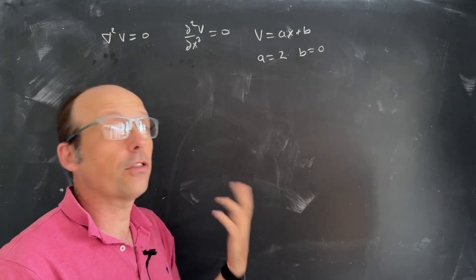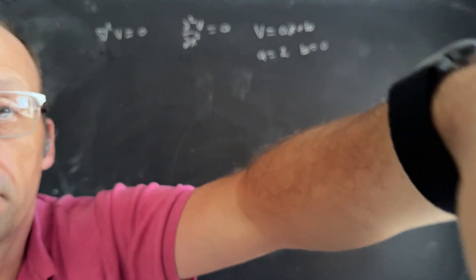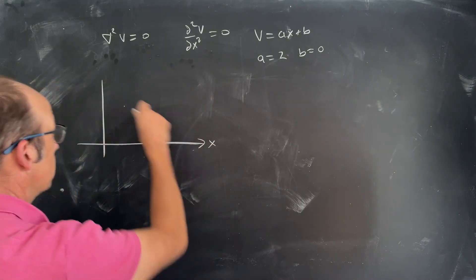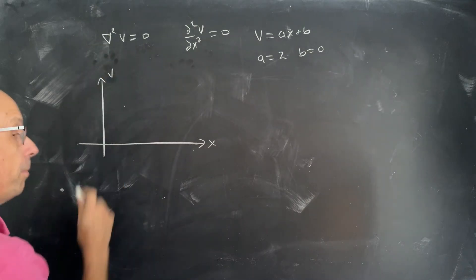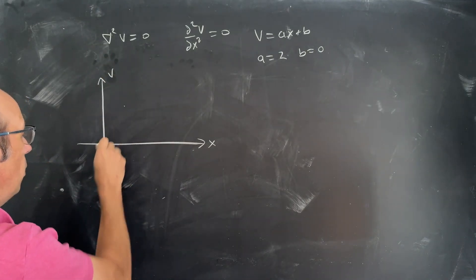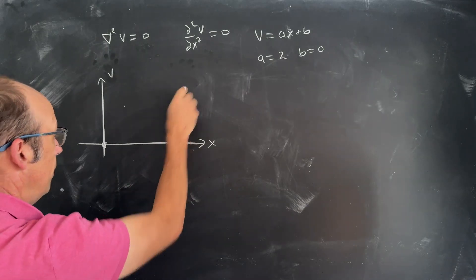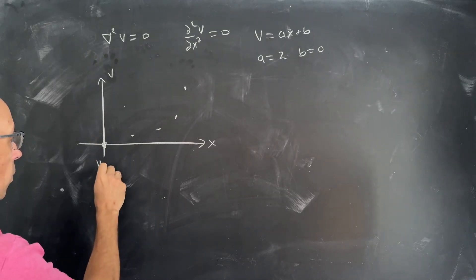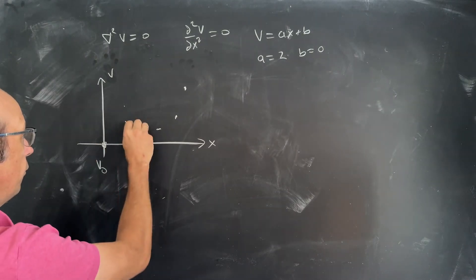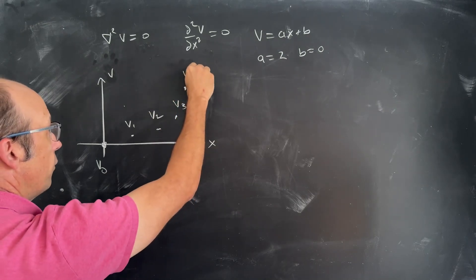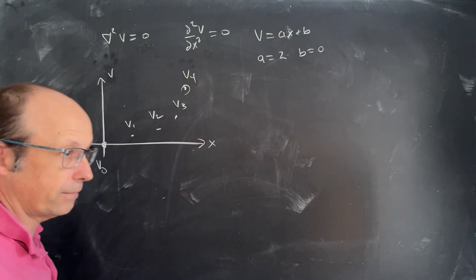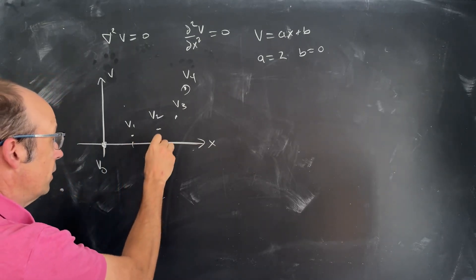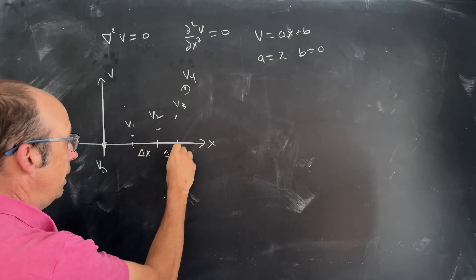This is called the relaxation method. Suppose I have the following: x and v. I have finite values for these points. I know that one boundary has to be there and the other has to be there, but the middle points may be anywhere. I can label these as v0, v1, v2, v3, v4. So I have v4 set and v0 set, and they're all a different distance delta x apart.